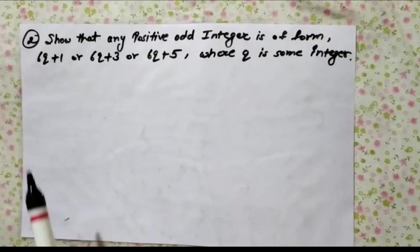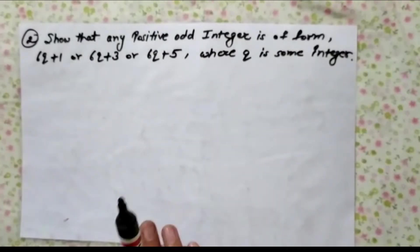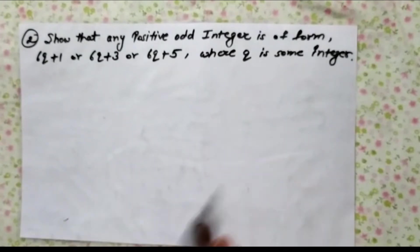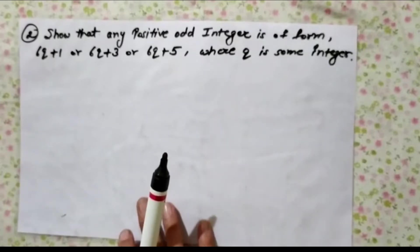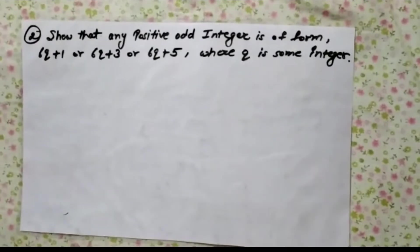Today we have a question: show that any positive odd integer is of the form 6q plus 1, 6q plus 3, or 6q plus 5, where q is some integer.